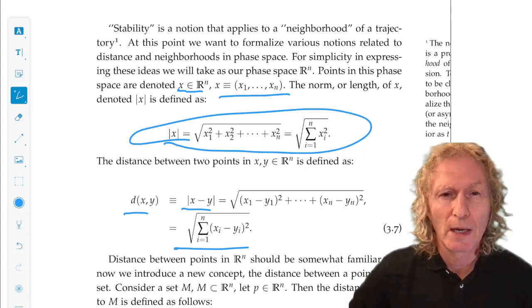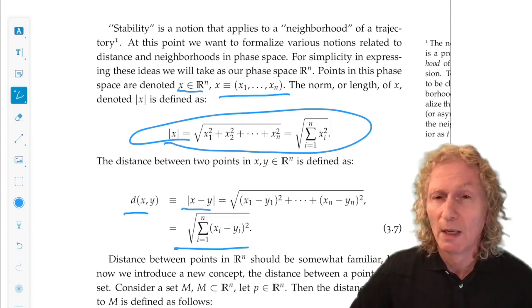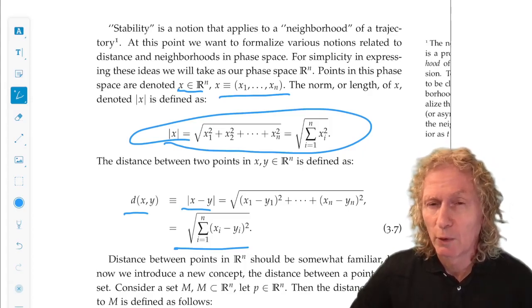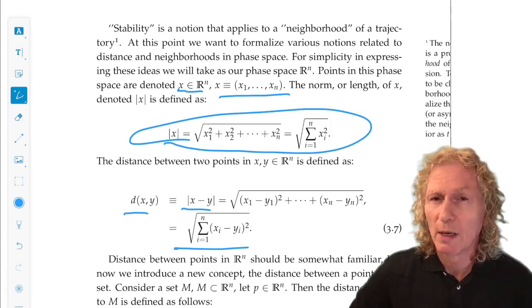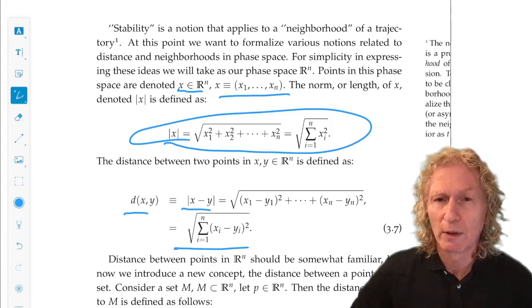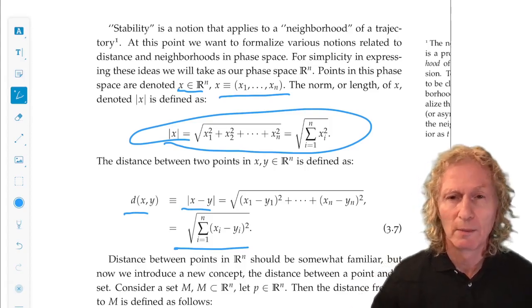So that's good for now. Next time I will talk about stability of an invariant set. Of course, a trajectory is an example of an invariant set, but we want to look at more general invariant sets as we introduced in the last lecture. Okay, so bye for now.